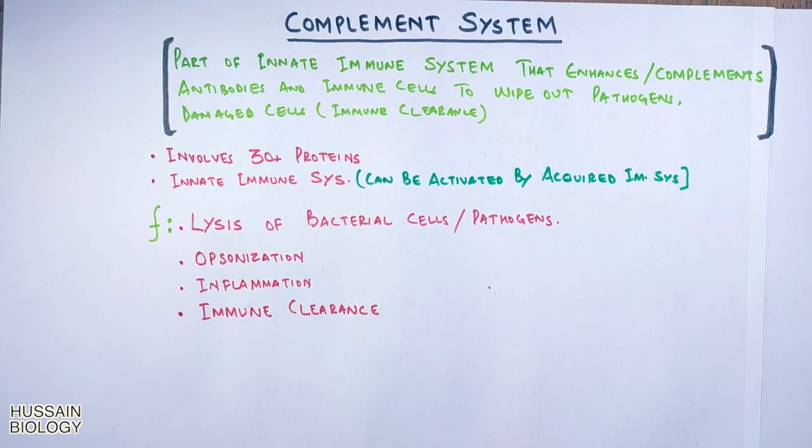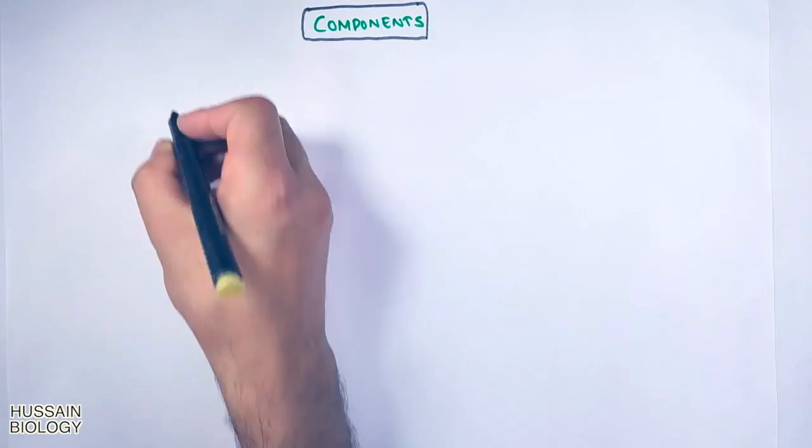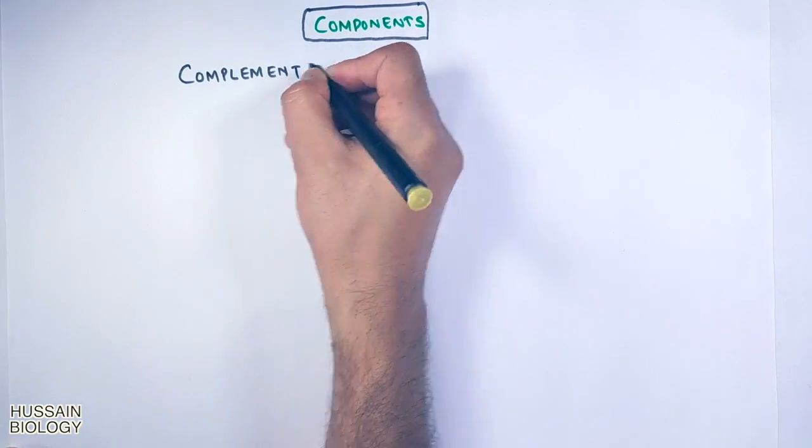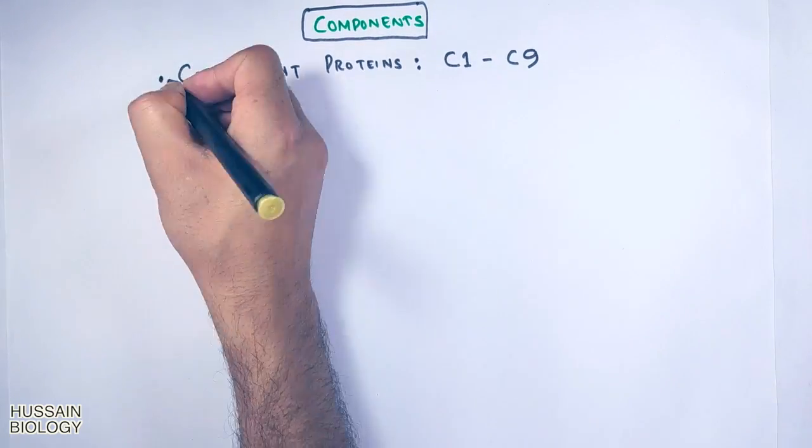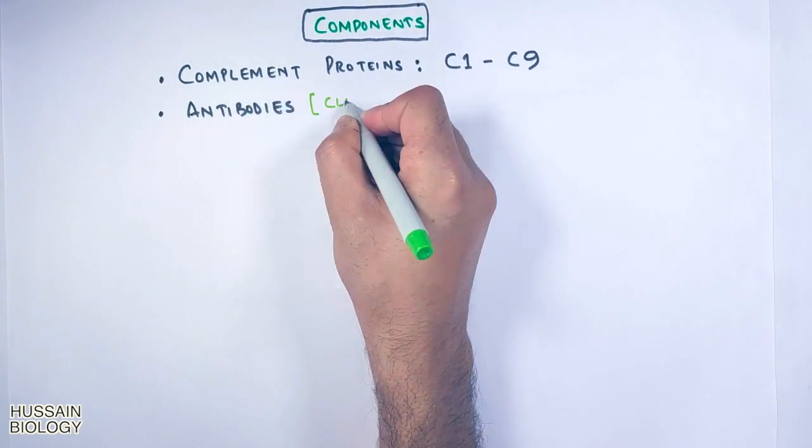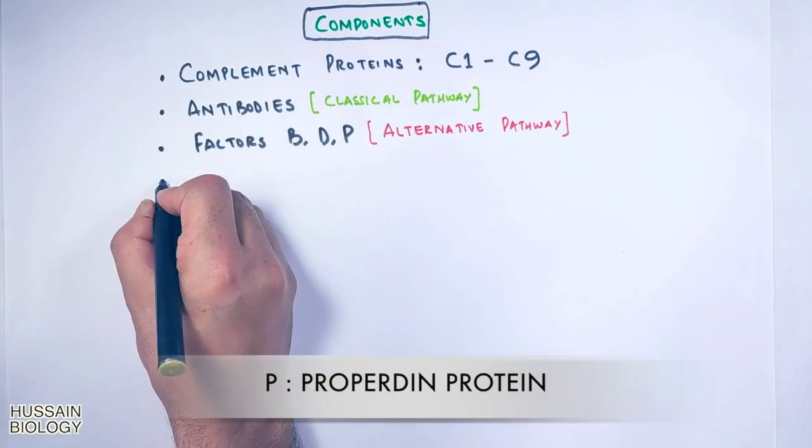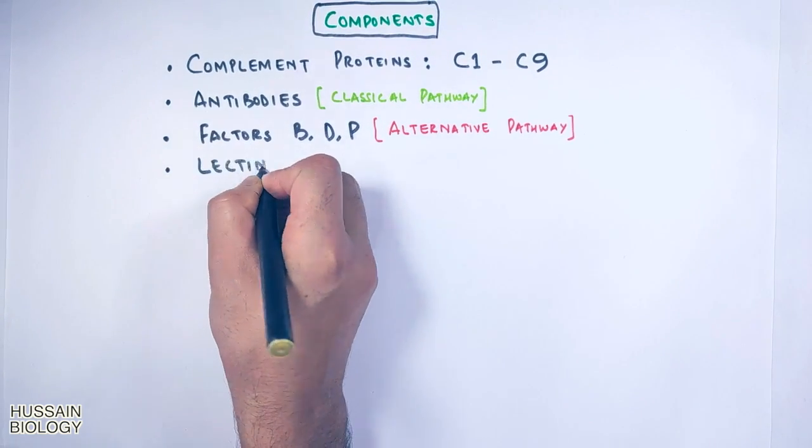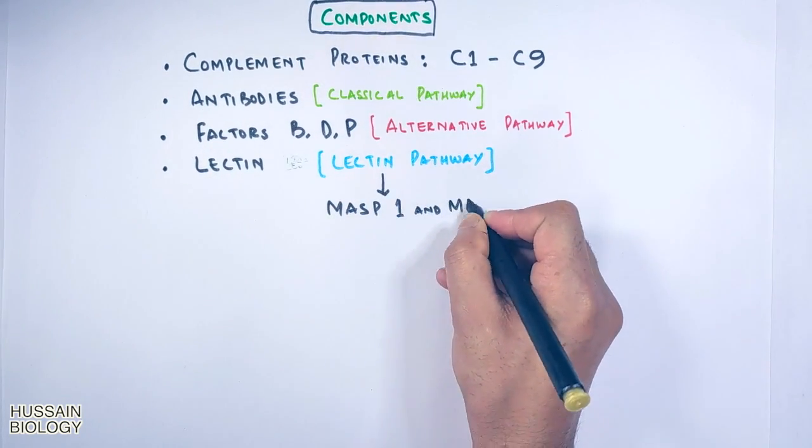First of all, let's see its components. The complement system has complement proteins from C1 to C9. It involves antibodies during classical pathway, it needs factors like factor BDP in alternative pathway, and it also involves lectin in lectin pathway which needs two proteins MASP1 and MASP2.